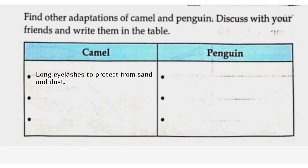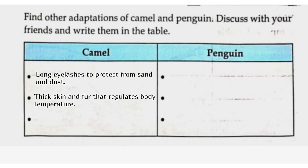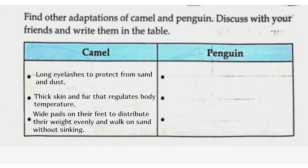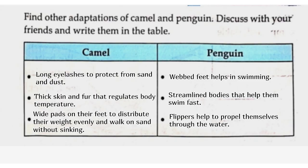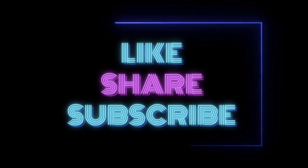Camel: Long eyelashes to protect from sand and dust. Thick skin and fur that regulates body temperature. Wide pads on their feet to distribute weight evenly and walk on sand without sinking. Penguin: Webbed feet help in swimming. Streamlined bodies help them swim fast. Flippers help to propel themselves through the water. Thank you. Please like, share and subscribe for more updates.